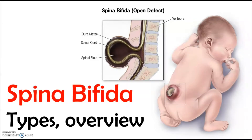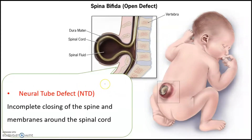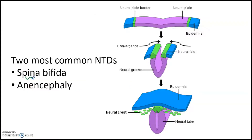Today we're going to talk about spina bifida. Spina bifida is Latin for split spine. It is a type of neural tube defect, also known as NTD. In spina bifida, there is an incomplete closing of the spine and membranes around the spinal cord. Spina bifida is one of the most common types of neural tube defects.